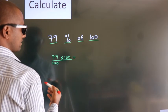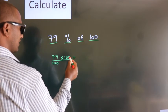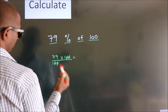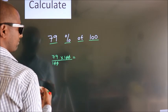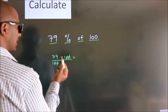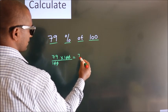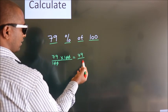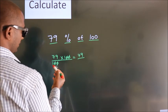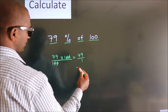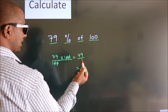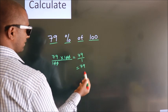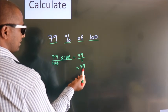Now I cancel this zero with this, and this zero with this. We are left with 79 into 1, which is 79. In the denominator, 1. So 79 by 1 is 79. This is our answer.